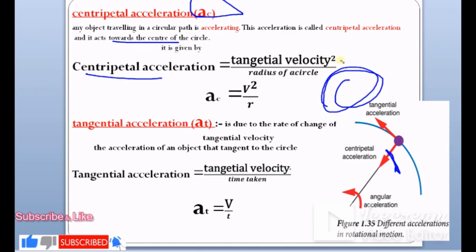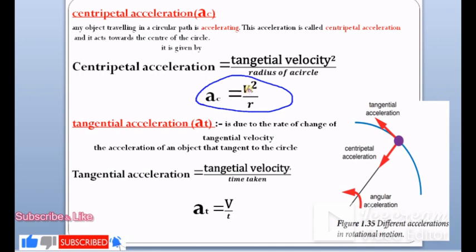ac = v²/r, where v is tangential velocity and r is the radius. Centripetal acceleration is directed towards the center.